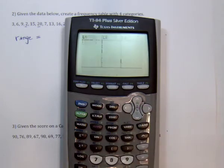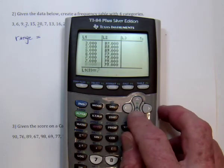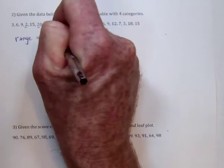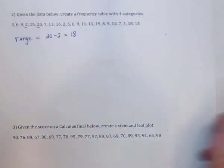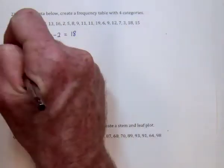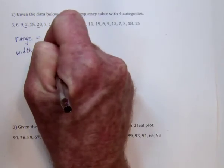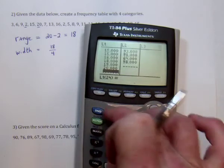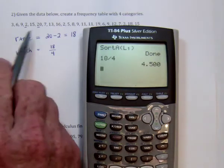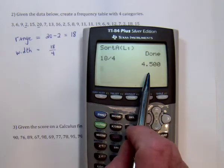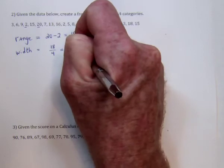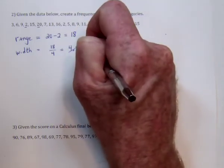Now I can go back and double-check: 2 is the smallest, and going down to the bottom, 20 is the biggest. So the range is 20 minus 2, which is 18. We now have to divide that into four pieces for the width: 18 divided by 4 is 4.5. Since none of these numbers are decimals, I'm going to round it up to 5. Even if the decimal were 4.1, no matter what, you round it up. So use 5 for the width.